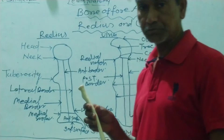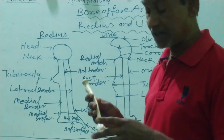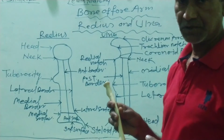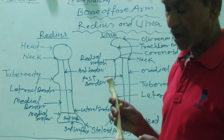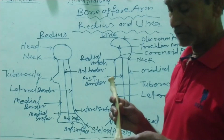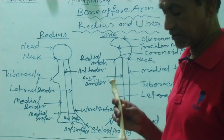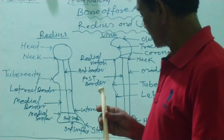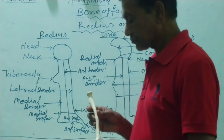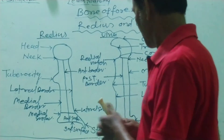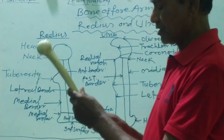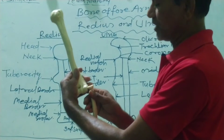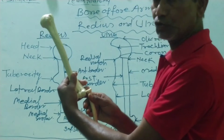The lower end of the radius presents a cone-shaped projection known as the styloid process, directed downward and inferiorly, or slightly laterally. It is a non-articular portion of the radius. The inferior surface articulates with the carpal bones forming the wrist joint. The upper end of the radius articulates through the radial notch and radial fossa at the lower end of the humerus, forming the radial-humeral joint.